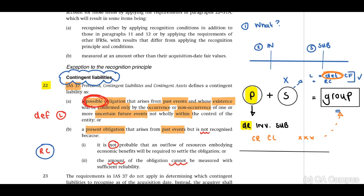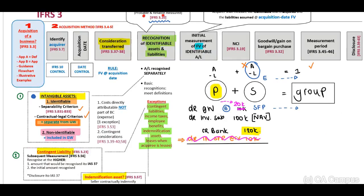Importantly, the initial measurement should be at fair value. For subsequent measurement, refer to paragraph 56 — we will recognise at the higher of the amount that would have been recognised in terms of IAS 37, versus the initial amount recognised at fair value on initial recognition. You will need to identify what the IAS 37 amount is versus the amount recognised at fair value on initial recognition.